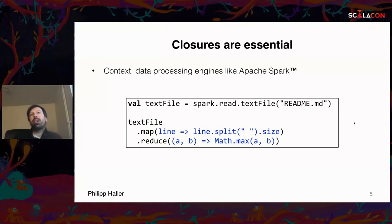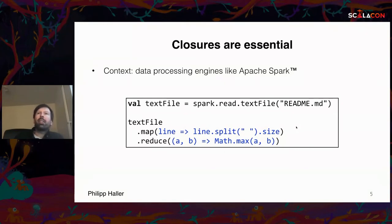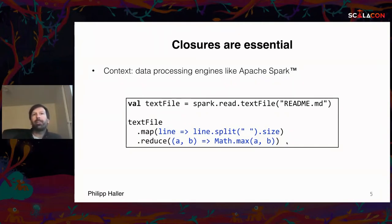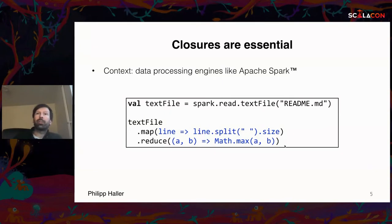Closures are used virtually everywhere in Scala code. For instance, if you use a data processing engine like Apache Spark, even for very simple programs we tend to use many closures. In this simple example we read a text file and use Spark to determine the maximum number of words on any line. We use map and reduce — first splitting each line into words and counting them, then computing the maximum. Already in this very simple example we use two closures.